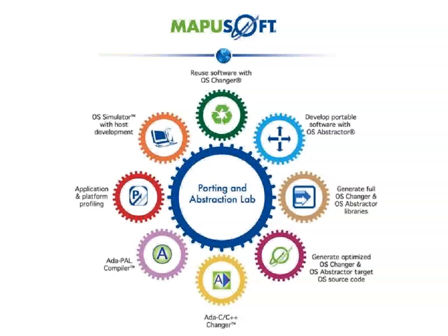The profiler, shown in the red gear on the left, collects performance data concerning your application and the platform. The data is graphically viewed with charts and graphs to find bottlenecks system-wide or regarding a specific task, and to compare performance metrics on various target environments. OS Simulator, shown in the orange gear on the top left, provides a way to develop and debug VxWorks, POSIX, Linux, Microitron, Windows, PSOS, and Nucleus applications on Windows and Linux host machines without the target hardware.